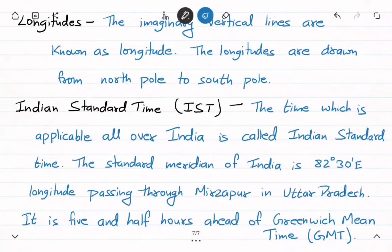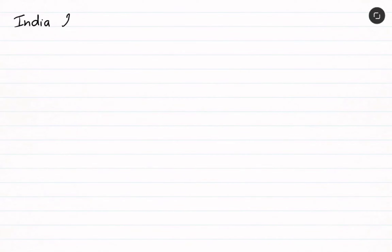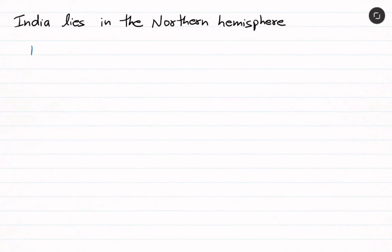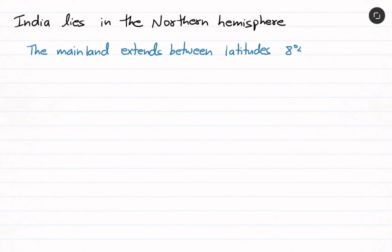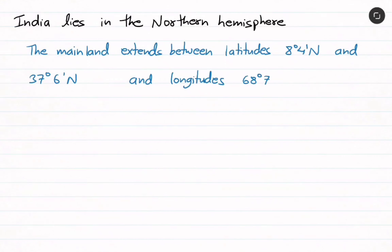India lies in the Northern Hemisphere, and the mainland extends between latitudes 8 degrees 4 minutes North and 37 degrees 6 minutes North, and longitudes 68 degrees 7 minutes East and 97 degrees 25 minutes East. So India's mainland extension is defined by both latitude and longitudinal marks.